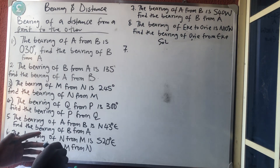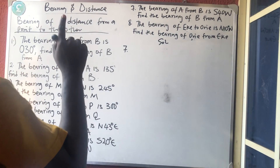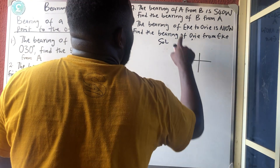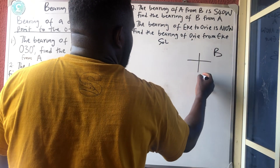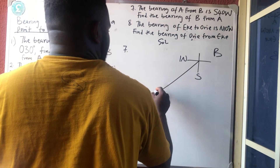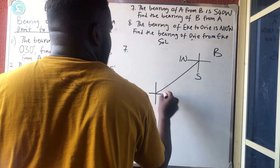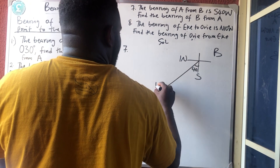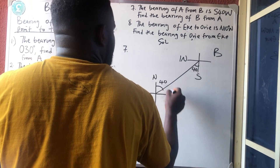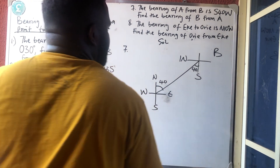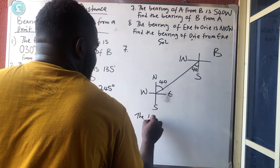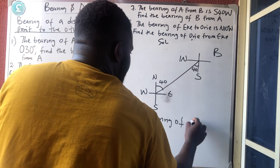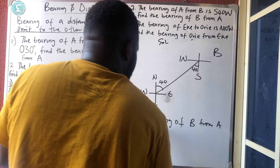Number seven says the bearing of A from B — from B — is south 40 degrees west. South and west is in the third quadrant, so I will draw it here. This is B — this is my south and west. I'm drawing my line here. I cut like this before I cut like this. This is the south — the angle must be with the south: 40. And if here is 40, automatically this side is 40. The bearing of B now from A is what?